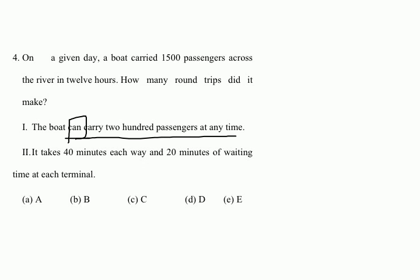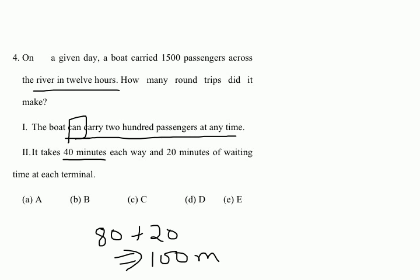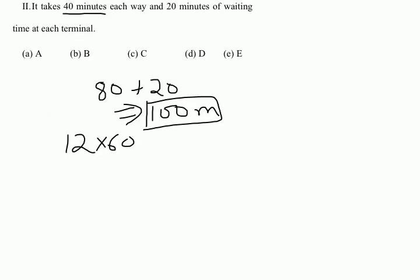Statement two alone: it takes 40 minutes each way, so a round trip is 80 minutes, plus a waiting time of 20 minutes, making the total round trip 100 minutes. The question says it operated for 12 hours, which is 720 minutes. So the number of round trips is 720/100. Wait — the solution actually uses 80 minutes per round trip: 12 × 60 / 80 = 9. You can get the answer using statement two alone, making the answer B.